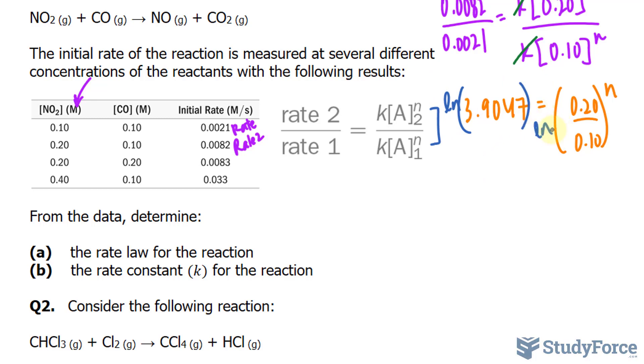And what this will do, using the rules of logs, this n will become a product. So the left side stays the way it is. And on the right side, we end up with n times ln of this stuff.